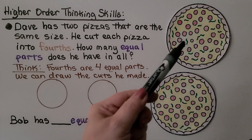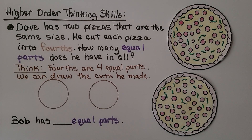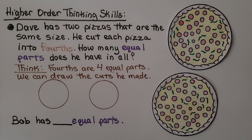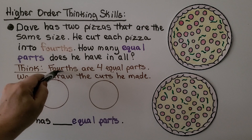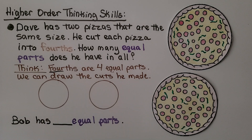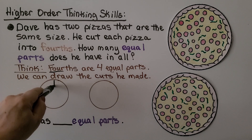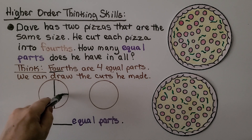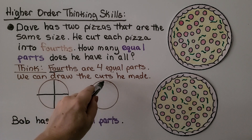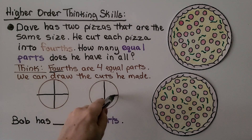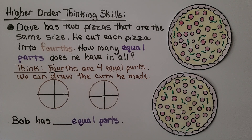Dave has two pizzas that are the same size. He cut each pizza into fourths. How many equal parts does he have in all? Fourths are four equal parts — we can even see the word 'four' in the word 'fourths.' We can draw the cuts he made: for a circle to have four equal parts, we cut it in half this way, then cut it in half this way. We do the same thing for the other pizza. Now each pizza is in fourths. How many slices does he have now?